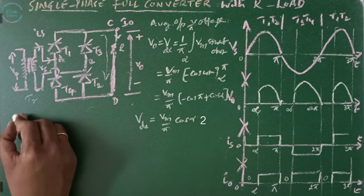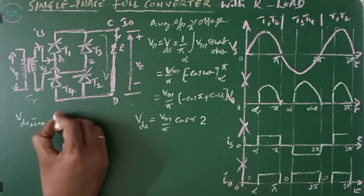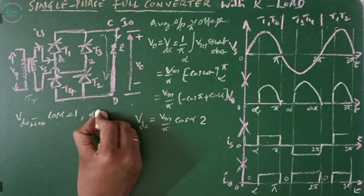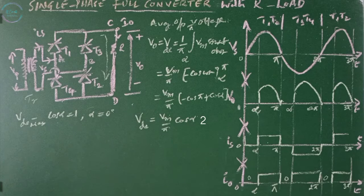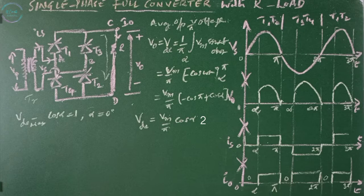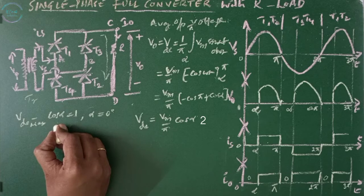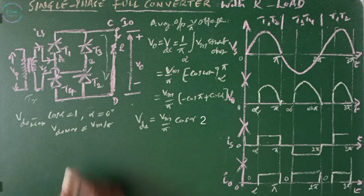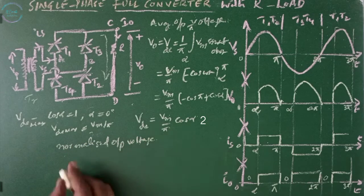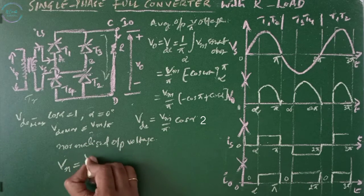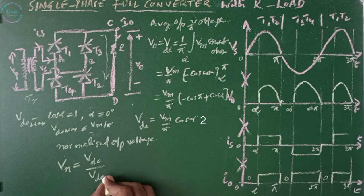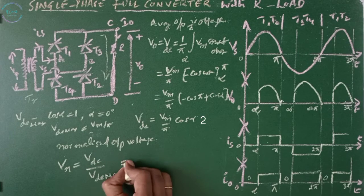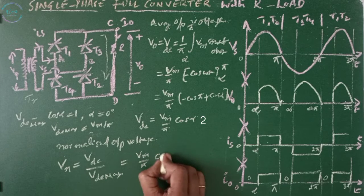Vdc is maximum when alpha equals zero degrees, giving Vdc_max = 2·Vm/pi. The normalized output voltage Vn equals the average output divided by the maximum average output, that is (Vm/pi·cos(alpha)) divided by (Vm/pi), which equals cos(alpha).